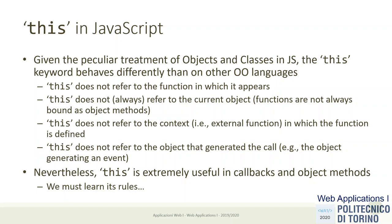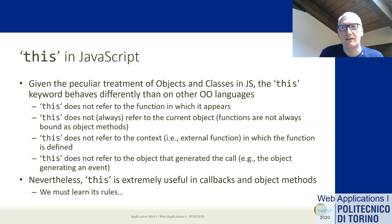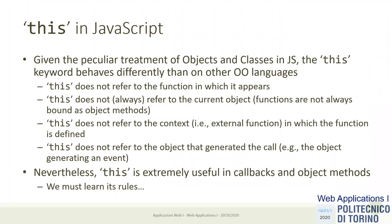'this' does not refer to the lexical context in which the function is defined — nesting a function inside other functions does not make 'this' refer to the outer function. Also, especially in the DOM, 'this' does not refer to the object that generated the call. For example, if a button triggers an event, 'this' inside the callback does not refer to the button — you must check the event's 'target' property. 'this' will refer to the window instead.